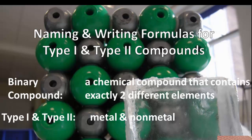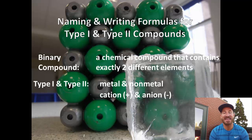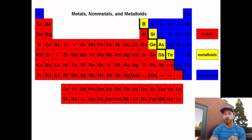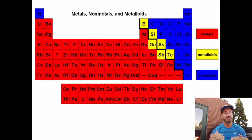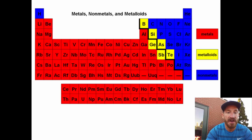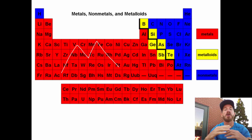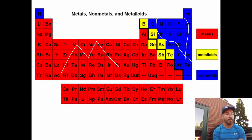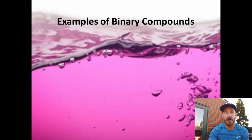Type 1 and type 2 compounds generally have a metal and a nonmetal, but specifically they also have a positive cation and a negative anion. Metals will always have positive charges when they're in compounds. It's important to pull out your periodic table and write some notes on it. You want to recognize where the metals are and where the nonmetals are. All the red elements are metals — most elements on the periodic table are metals. There are only a few nonmetals. So if you have a metal written first, it's going to be a type 1 or type 2 compound.